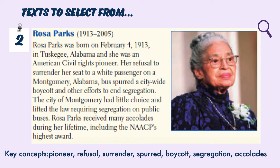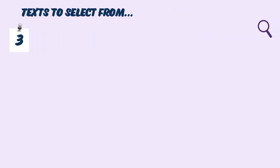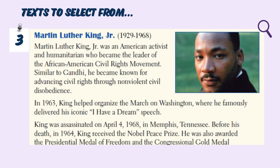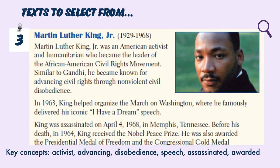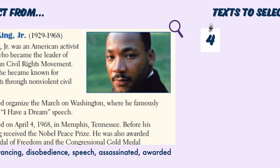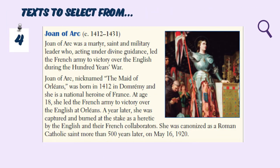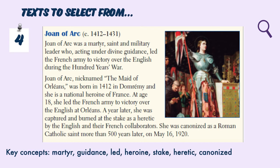Text three is about Martin Luther King Jr. — key concepts: activist, advancing, disobedience, speech, assassinated, and awarded. Text four is about Joan of Arc — key concepts: martyr, guidance, lead, hearing, stake, heretic, and canonized.